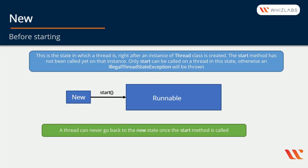The New state is quite simple. This is the state in which a thread is right after an instance of the Thread class is created. The start method has not yet been called on the instance. Only start can be called on a thread in this state; otherwise, an IllegalThreadStateException will be thrown. A thread can only go from New to Runnable and it can never go back to New after the start method is called. This means a thread can only be used once.